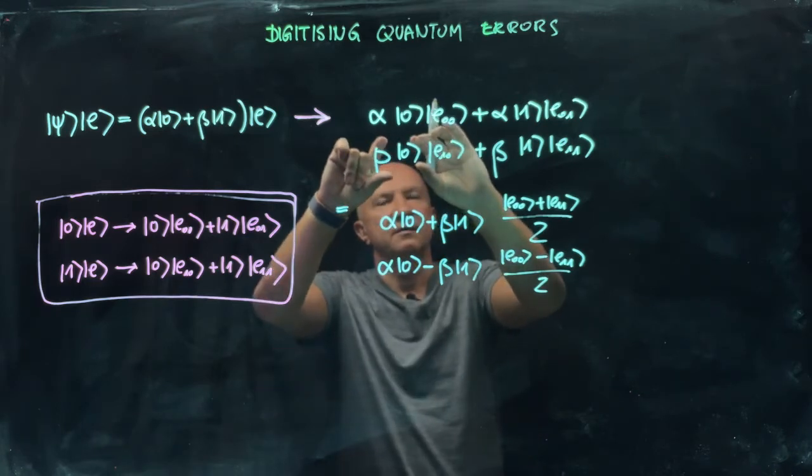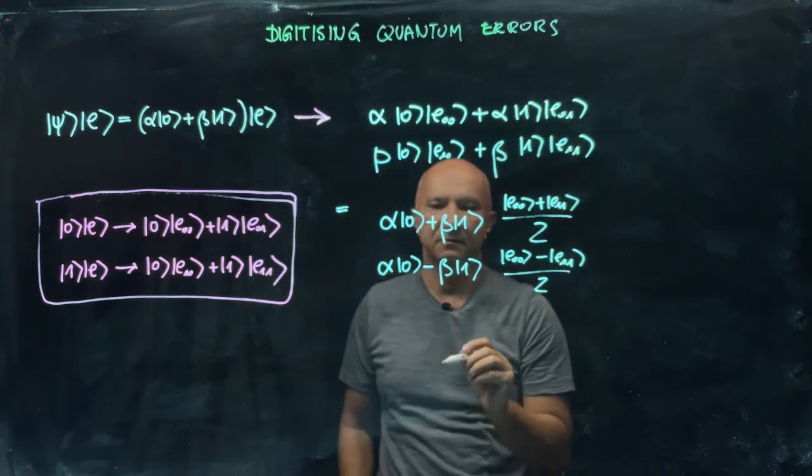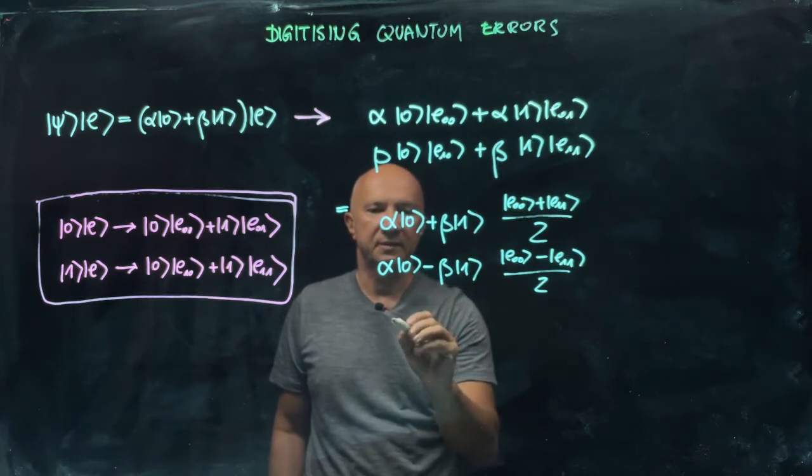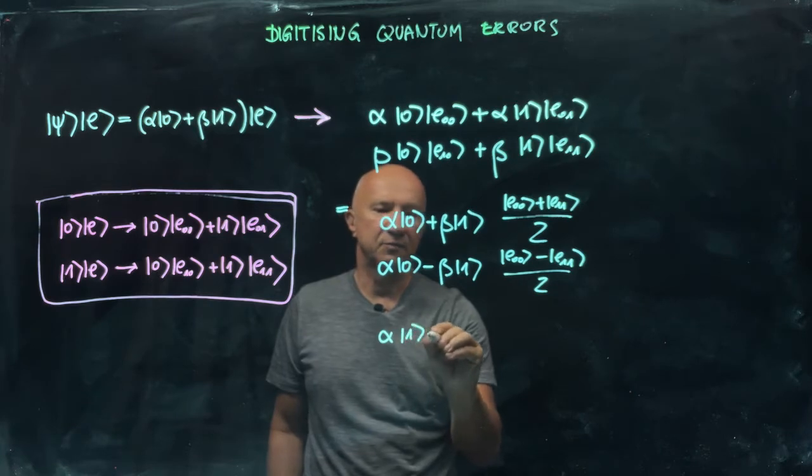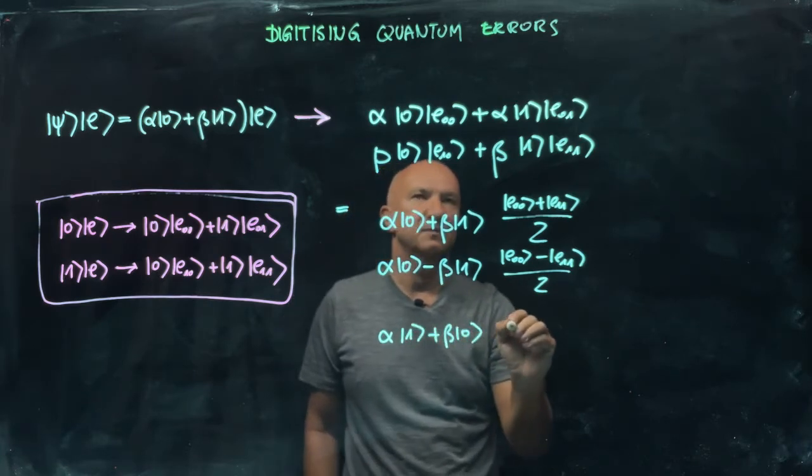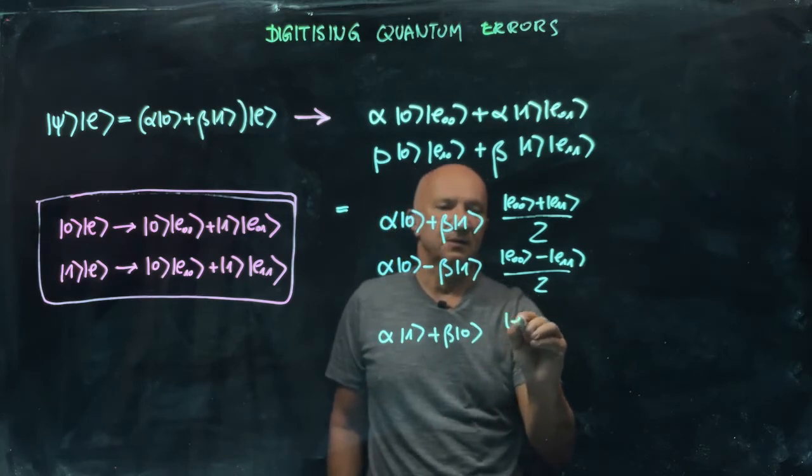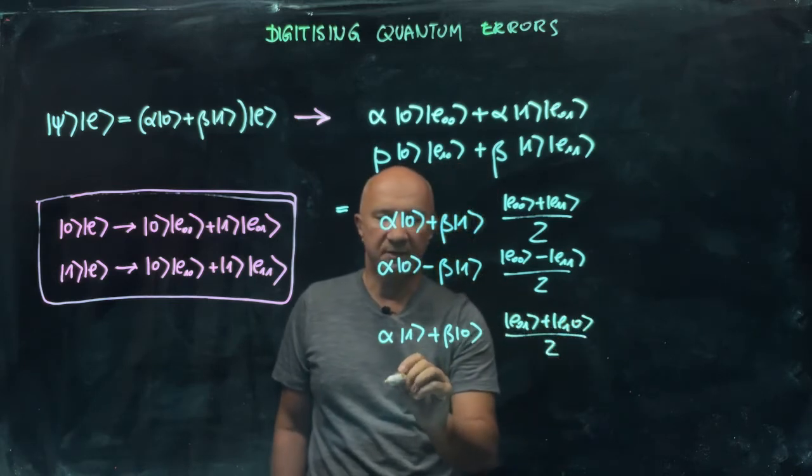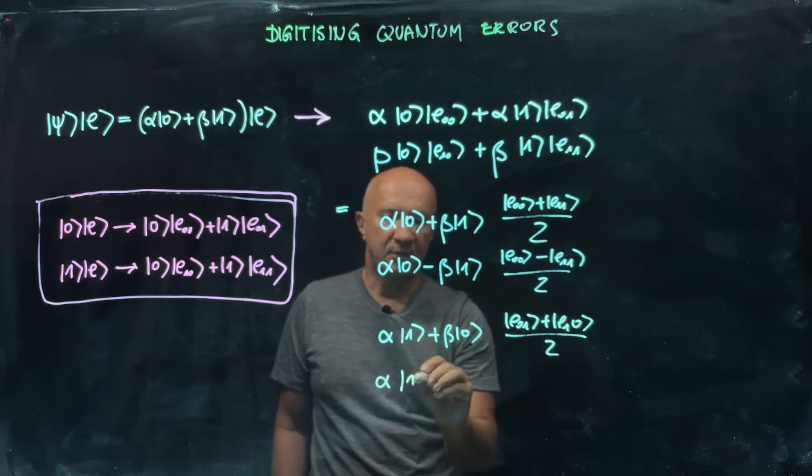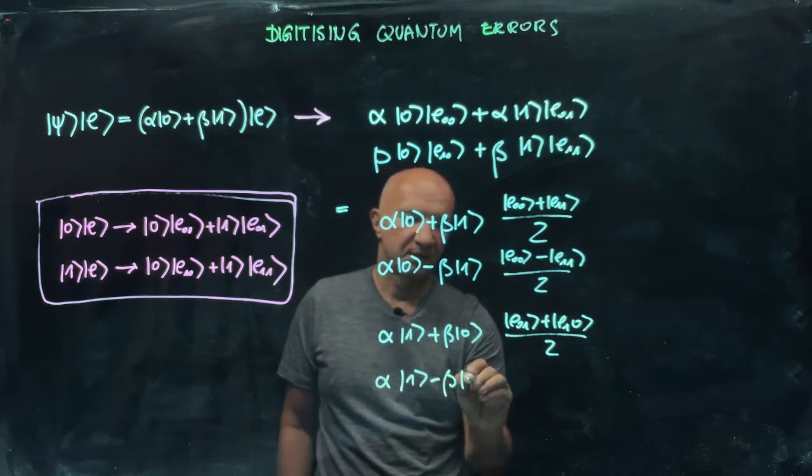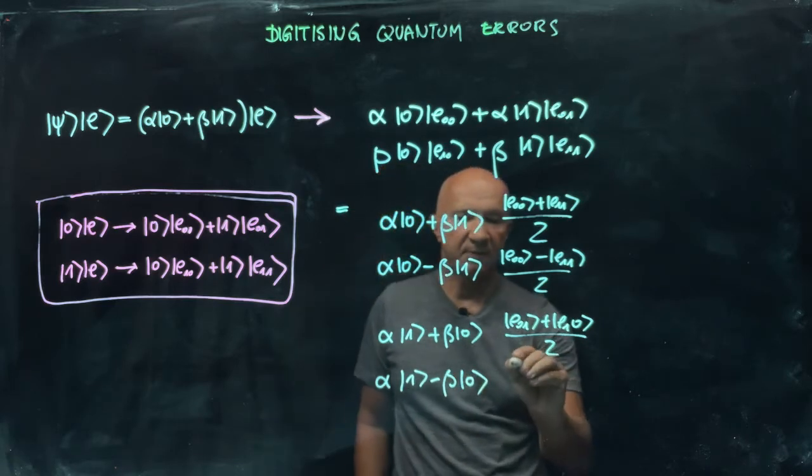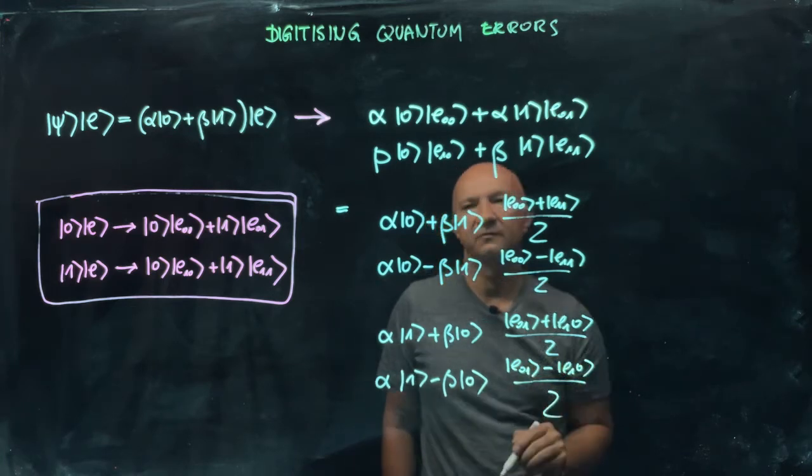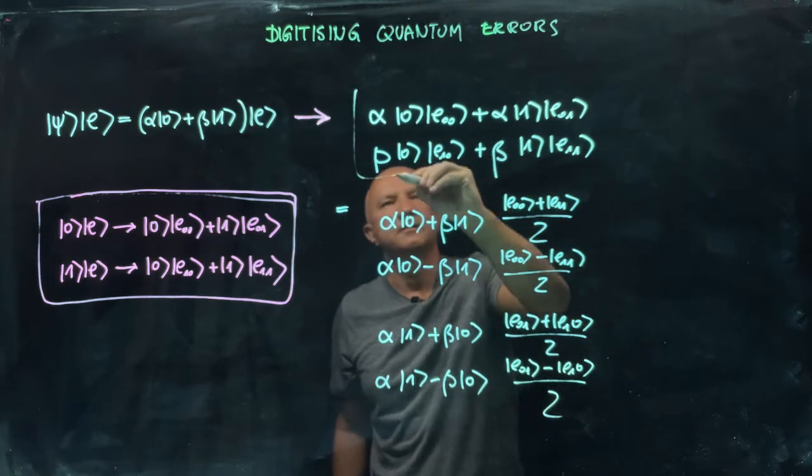Now I'm looking at the remaining terms. I'm going to write those two terms as follows: alpha|1⟩ plus beta|0⟩, and then I will have terms (|E0⟩ + |E1⟩)/2, and then I will have the expression (alpha|1⟩ - beta|0⟩)(|E1⟩ - |E0⟩)/2. That's another way of writing this part.